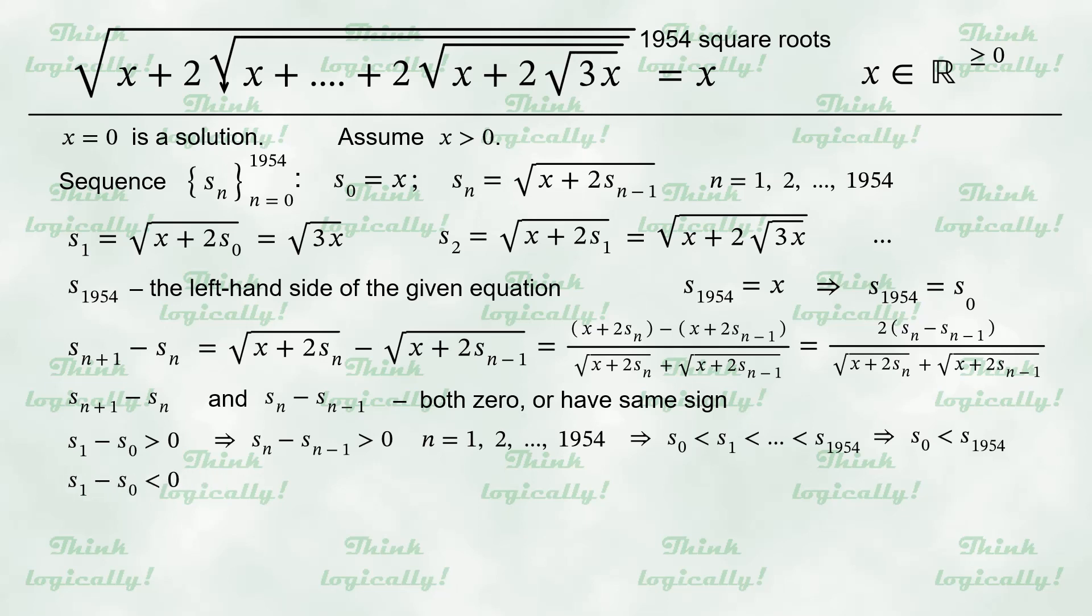In the similar way, if S sub 1 minus S sub 0 is negative, all the differences of two consecutive elements are negative, the sequence S is monotonically decreasing, and the starting element is strictly greater than the last element. This is also not what we are after.